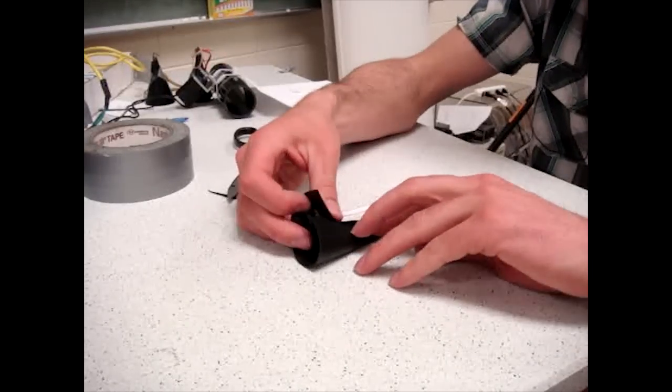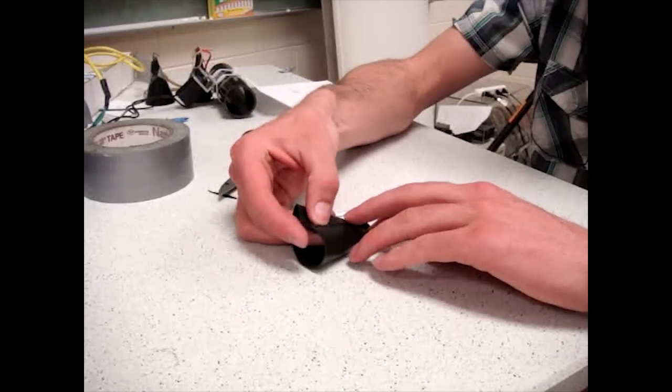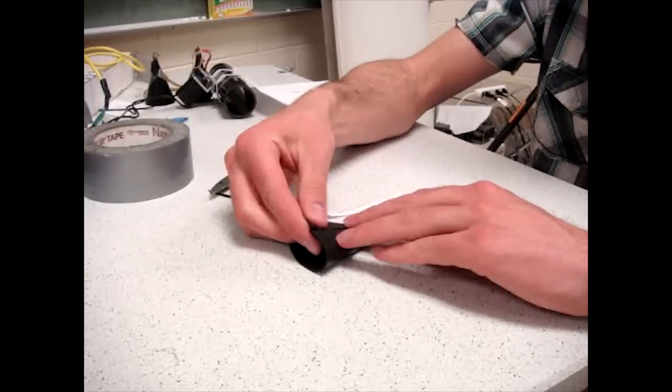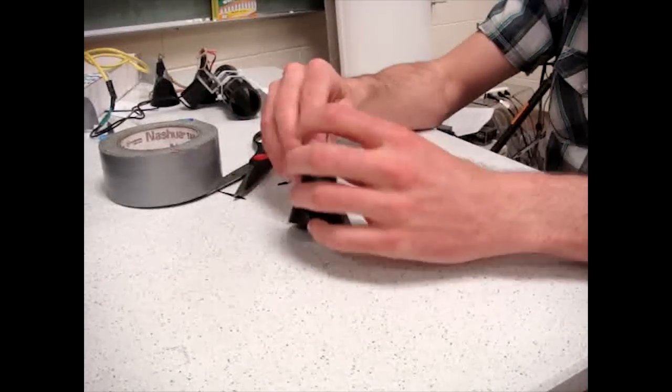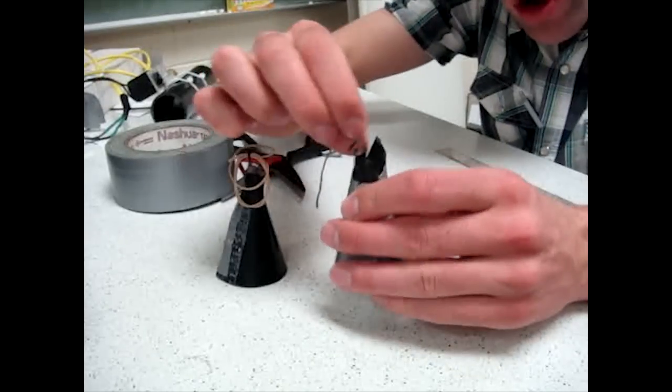After you have cut out the rubber, you will want to roll the rubber up into a cone shape and glue it together. The glue, if you are using hot glue, will probably not hold strong enough and you will also want to use duct tape.